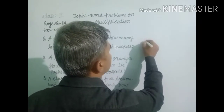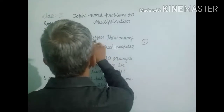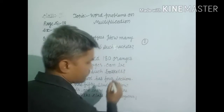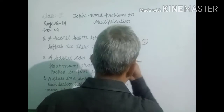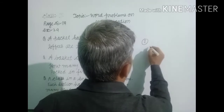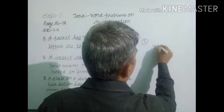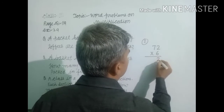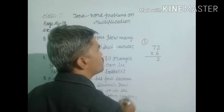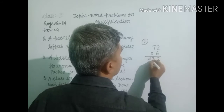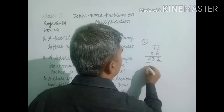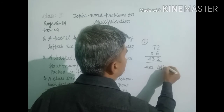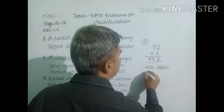So in the first question, the total number of toffees — how many toffees are there in 6 such packets? That means 6 packets with 72 toffees each gives us 432 toffees in total.